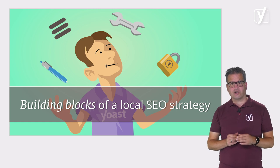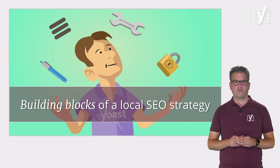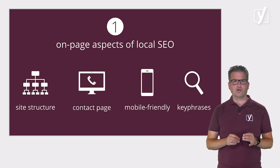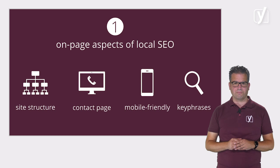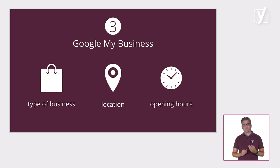Now that we know the factors that play a role in determining a site's place in the local search results, let's dive into the aspects we think should be part of a local SEO strategy. First and foremost, it's important to optimize on-page aspects of your site: structure your website, have a clear contact page, make sure your website is mobile friendly, and target the right key phrases. Off-page aspects are important as well — make sure other websites link to your website, build citations, implement a consistent customer review program, and work on your social media presence. Finally, it's important to optimize your Google My Business listing, an online platform where you can tell Google about your business: the kind of business you are, where you're located, the hours you're open, and more.